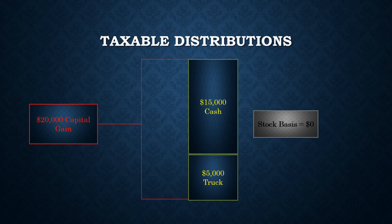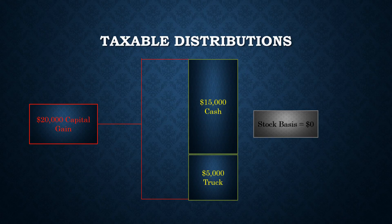Distributions of cash and property from an S-Corporation to its shareholders are generally tax-free, provided they have enough BASIS to absorb the distributions. If in a year when Bob's stock BASIS is already zero, he transfers title of a work truck worth $5,000 and transfers another $15,000 to his personal checking account, he'll report a total $20,000 capital gain on his tax return. He could avoid reporting that gain by having had at least $20,000 in BASIS at the beginning of the year.